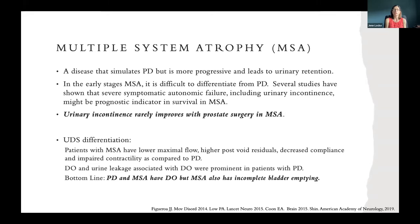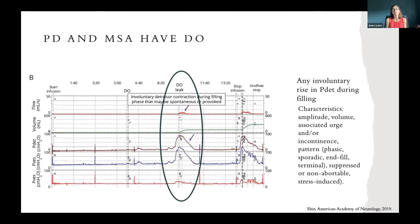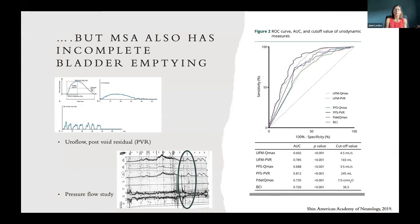Urodynamic differentiation between MSA and Parkinson's disease is key. MSA patients have a lower maximal flow, higher post-void residuals, and decreased compliance and impaired contractility compared to Parkinson's disease. Detrusor overactivity and urinary leakage associated with DO is more prominent in Parkinson's disease. Both Parkinson's and MSA show detrusor overactivity on the cystometrogram, but MSA also has incomplete bladder emptying — higher post-void residuals, guarded flow, and on pressure flow study, low flow with high pressure. This was found in a 2019 study by Shin correlating urodynamic findings in MSA compared to Parkinson's disease.